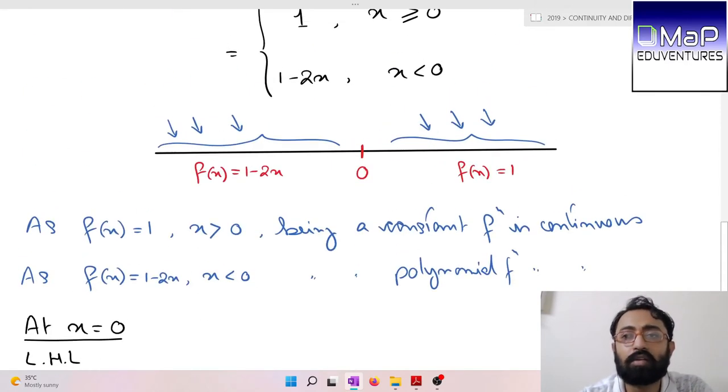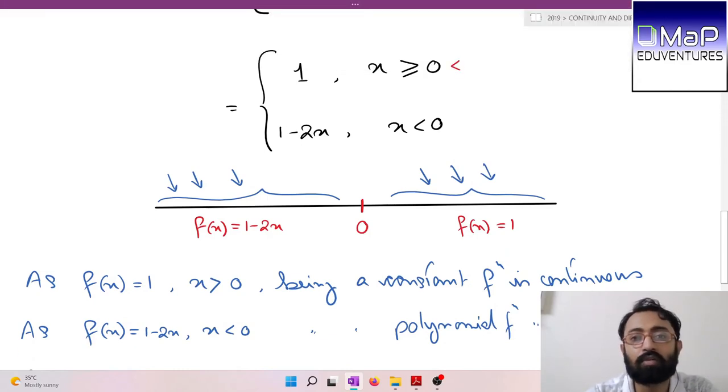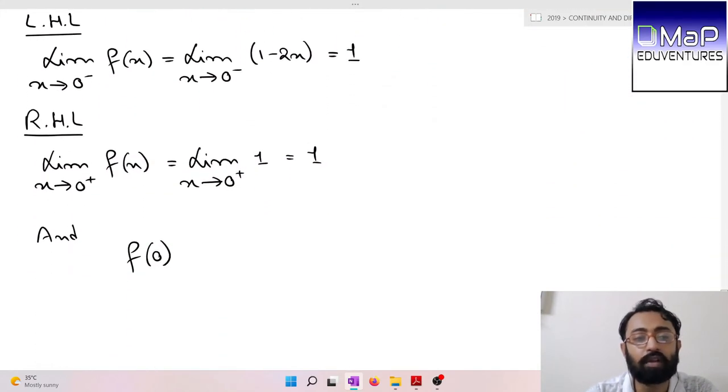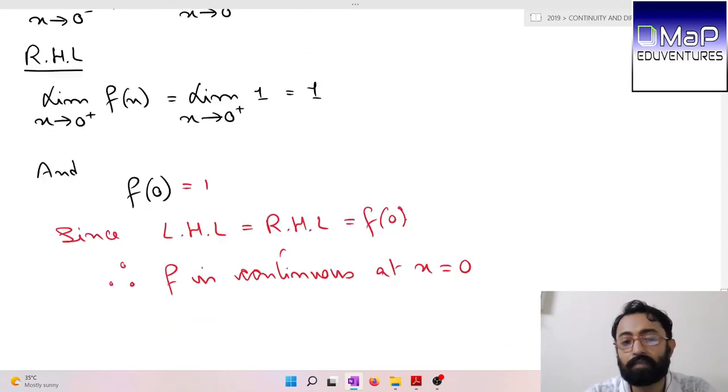Right hand limit of our function equals limit x tends to 0 plus, which is 1. The functional value f(0) = 1 because when x = 0, the function value is 1. Since left hand limit equals right hand limit equals f(0), therefore f is continuous at x = 0.